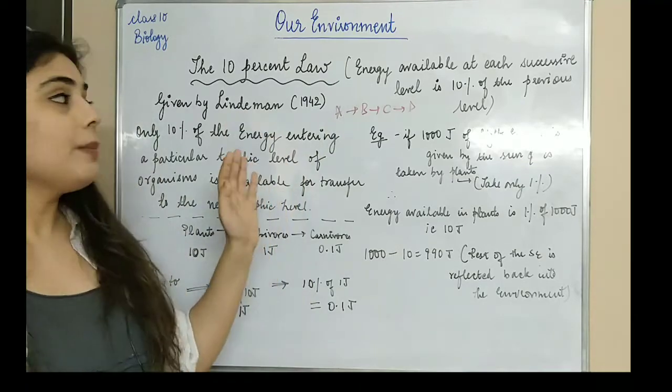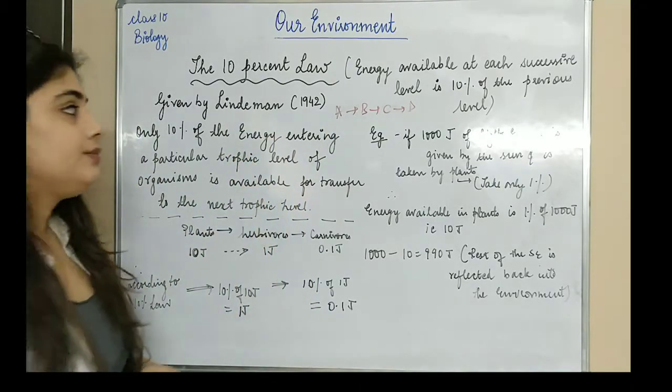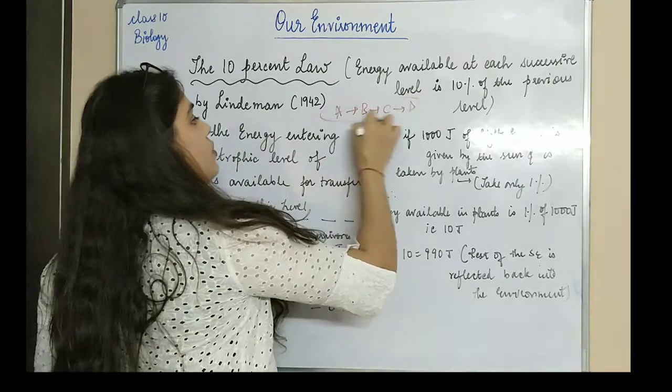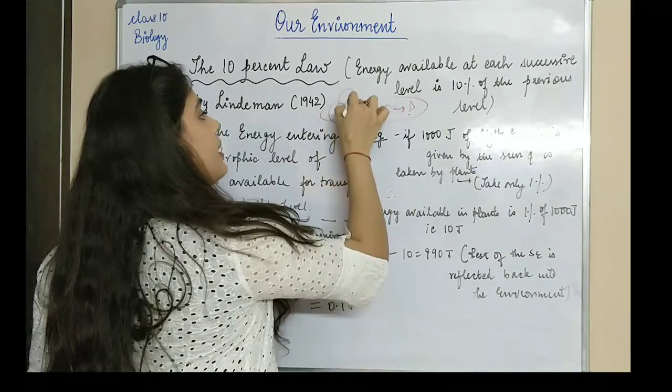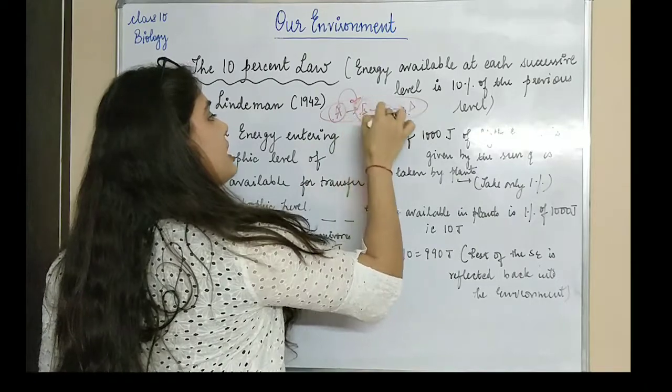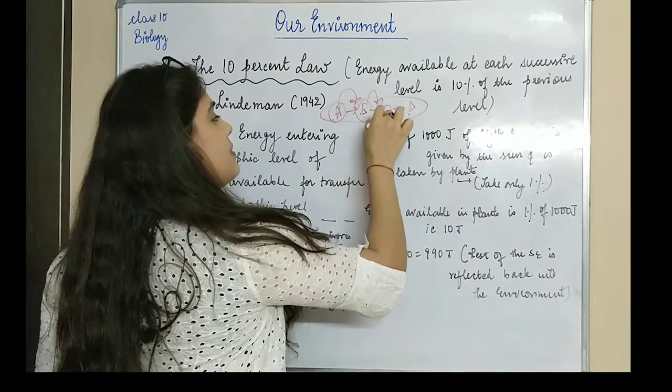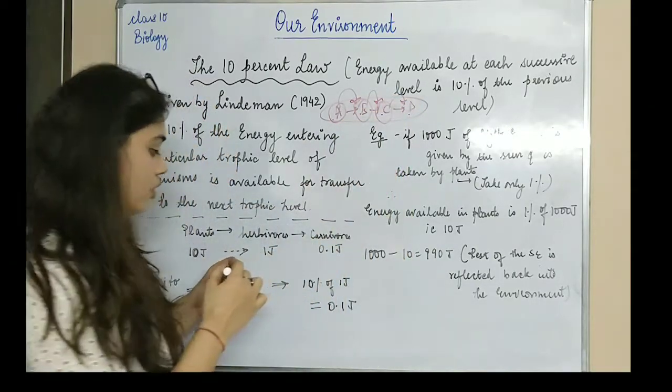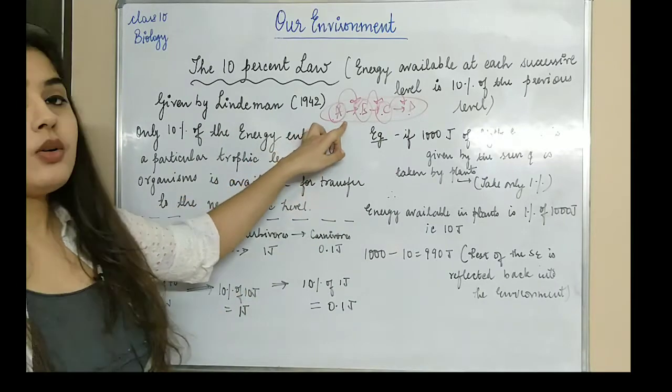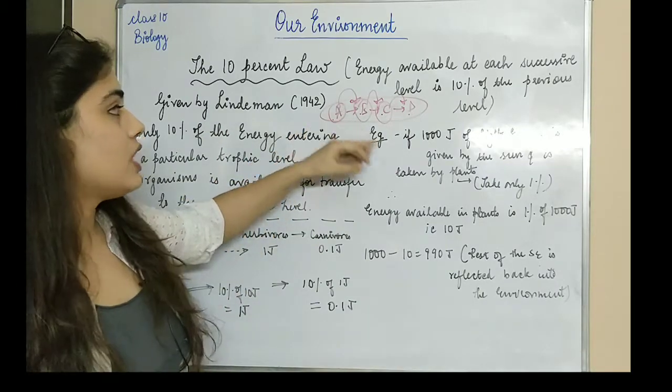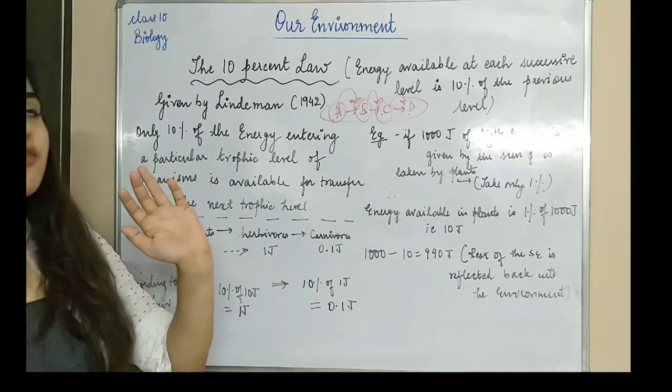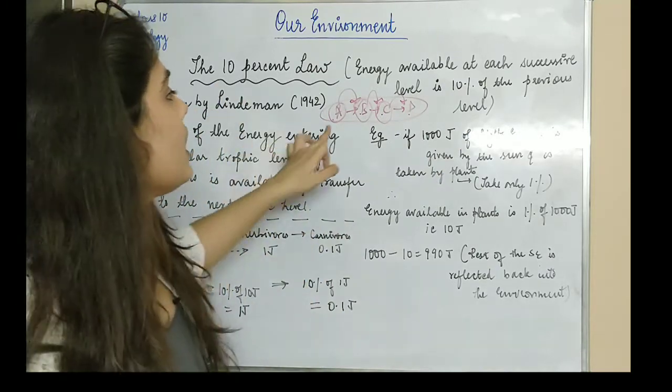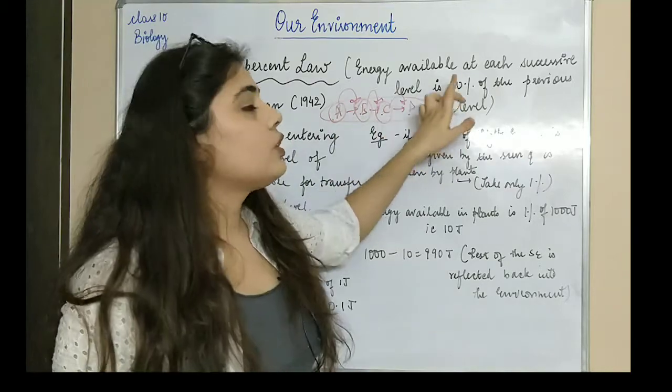Now what is the 10% law about? Earlier we talked about the food chain. This is an example of a food chain: A, B, C, D. A is being eaten by B, B is being eaten by C, C is being eaten by D. Some energy is transferred and some energy is liberated out in the form of heat.